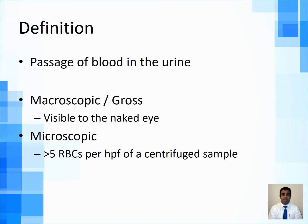It can be macroscopic or gross hematuria, which is visible to the naked eye — you can see the red color or shades of red in the urine. Or it can be microscopic, defined as the presence of more than five red cells per high power field in a centrifuged sample.